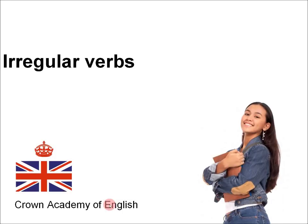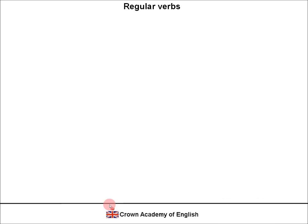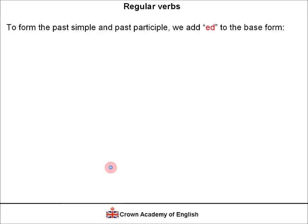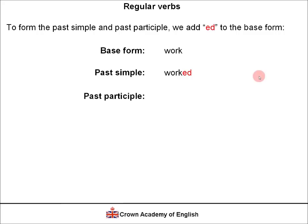Hello everyone, this is Andrew from Crown Academy of English. Today's lesson is about irregular verbs. So a very quick revision for regular verbs. To form the past simple and past participle, we add "-ed" to the base form. For example, the verb 'work': the past simple is 'worked' and the past participle is also 'worked'.